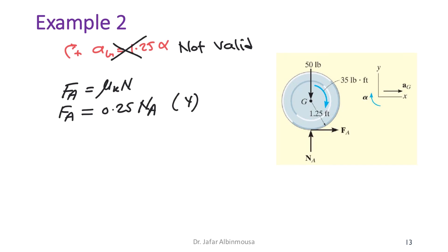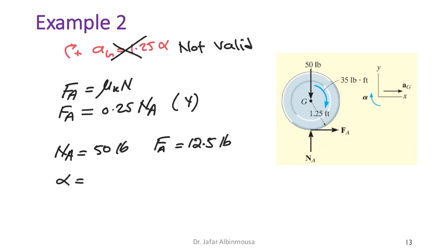Solving all four equations again gives: N_A = 50 lb, f_A = 12.5 lb, and α = 25.5 rad/s².